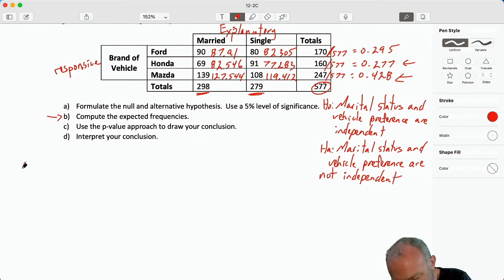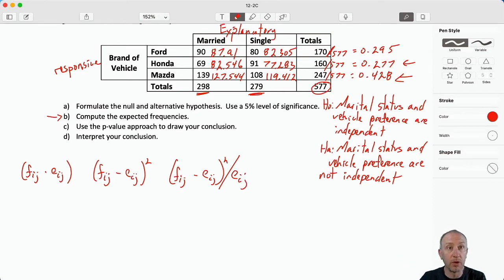Now we're going to go through and calculate all of these individual components of our chi-squared test statistic. We'll go row by row as we have done before. 90 minus 87.91, 2.09 squared, divided by 87.91.